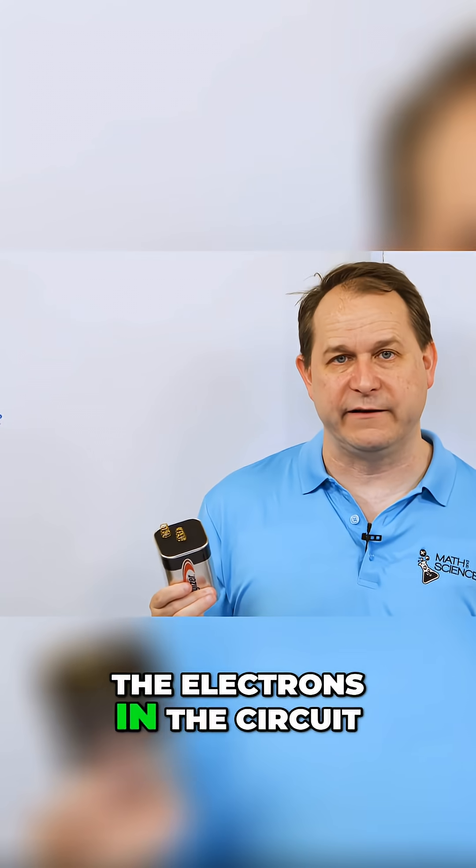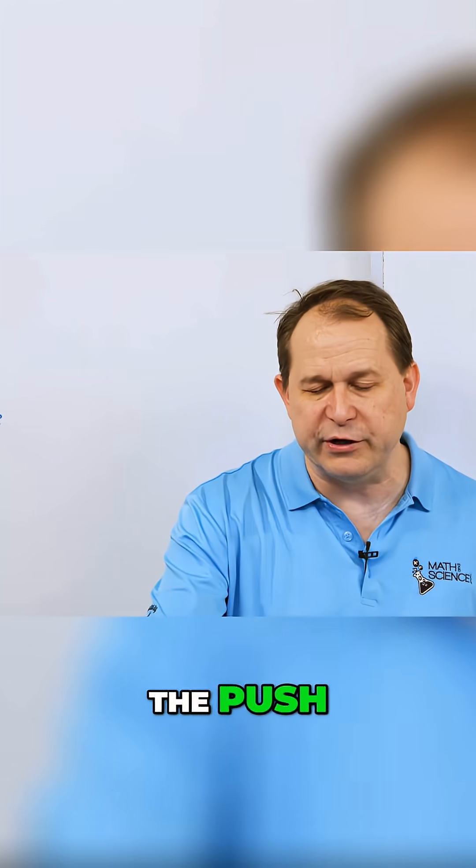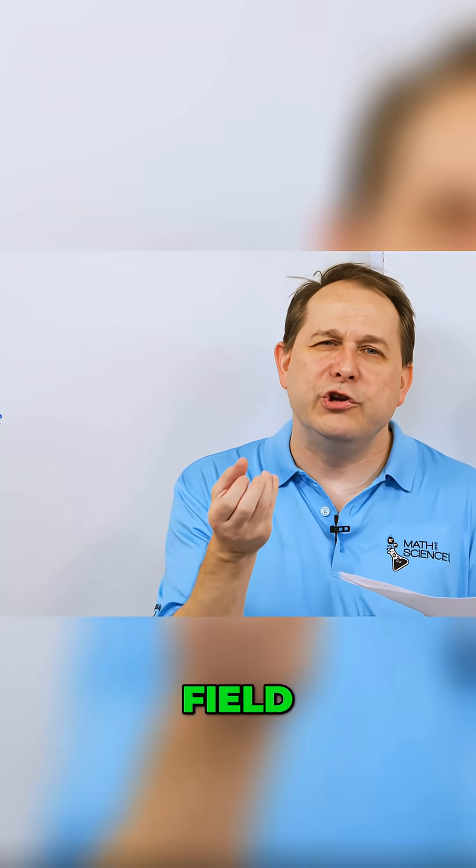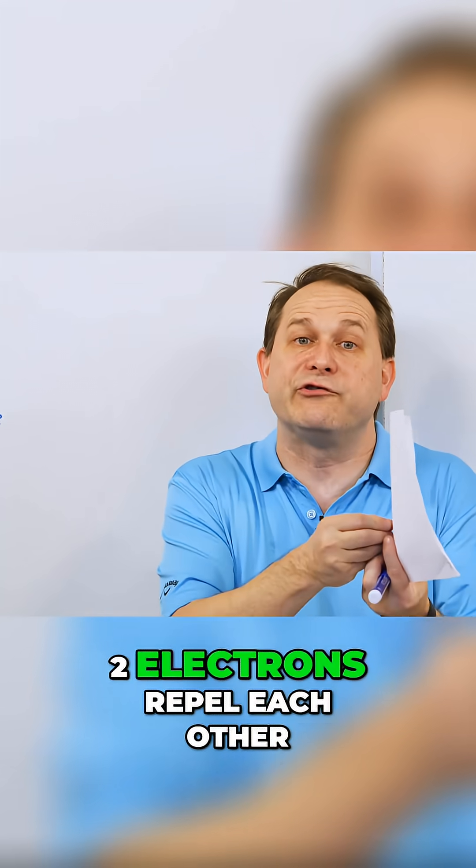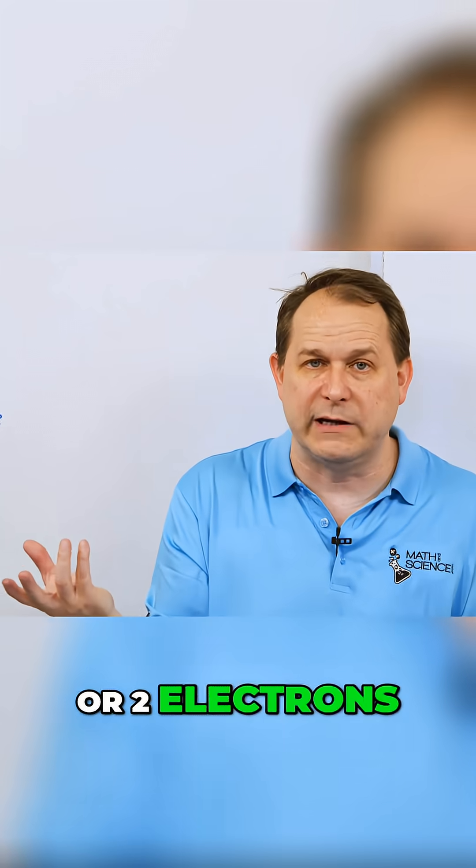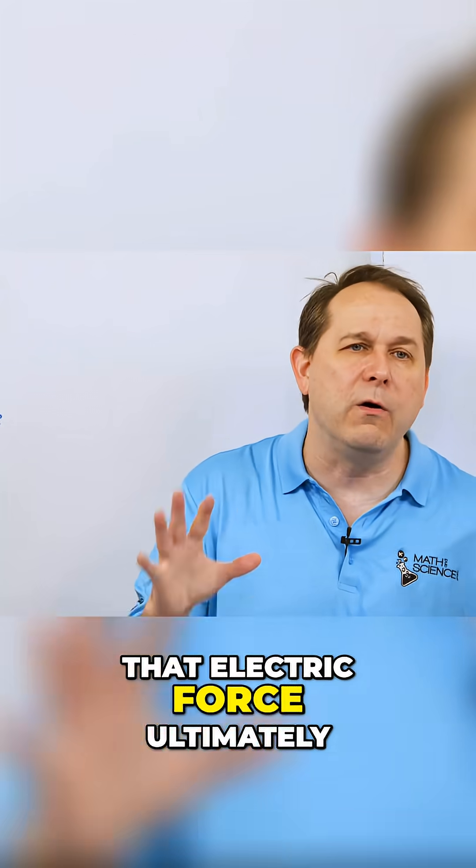To the electrons in the circuit, the push is coming from a chemical reaction. Ultimately, the push comes from what we call the electric field. You know from basic science that two electrons repel each other—like charges repel, either two protons or two electrons they repel, and opposites attract. That electric force ultimately is where all electricity comes from.